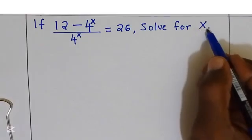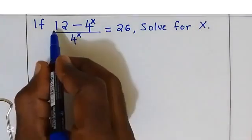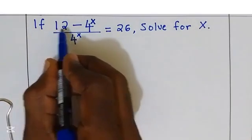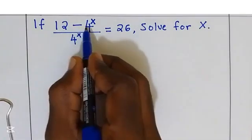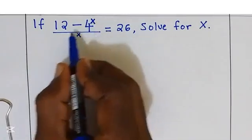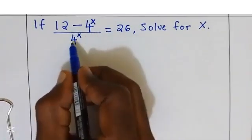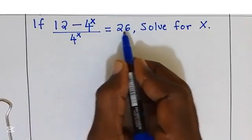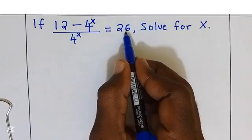We need to solve for x. They have given to us: 12 take away 4 power x, divided by 4 power x, is equal to 26.